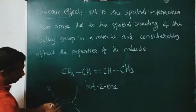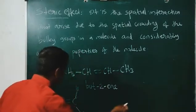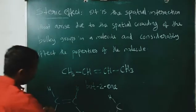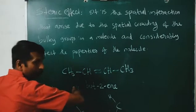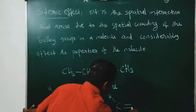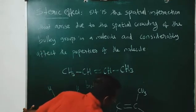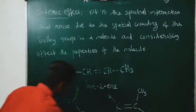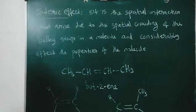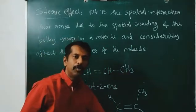Now look here. If you rotate this molecule, you get the other isomer. Here it is CH and here it is CH3. When you rotate the molecule, the CH3 group will go up and the H will come down. So we get the other isomer — the CH3 groups are now on opposite sides. This isomer is known as trans-but-2-ene. This is cis-but-2-ene and this one is trans-but-2-ene.